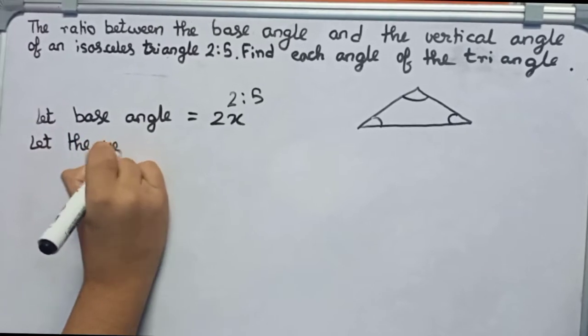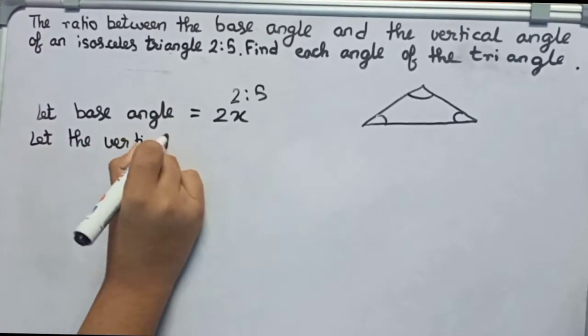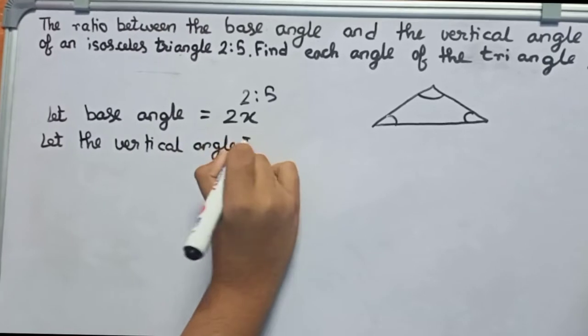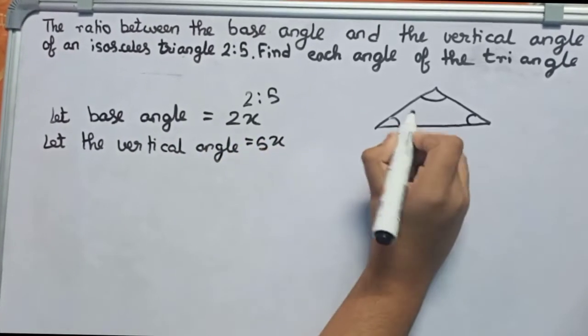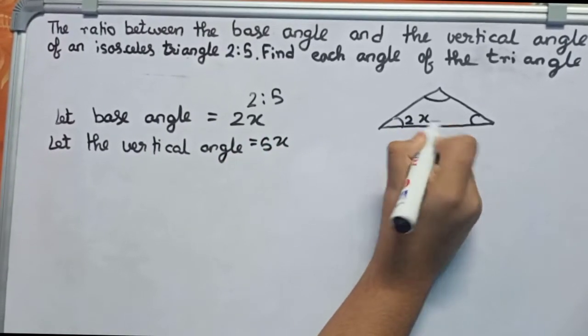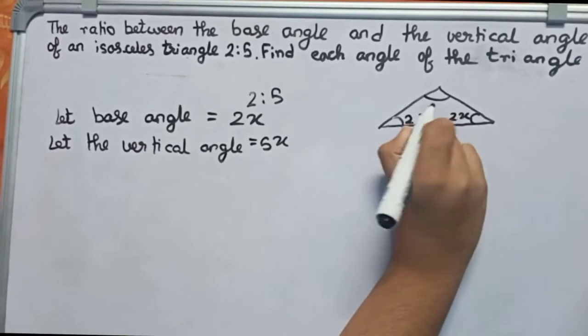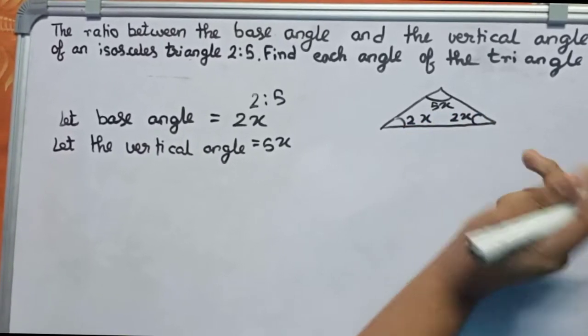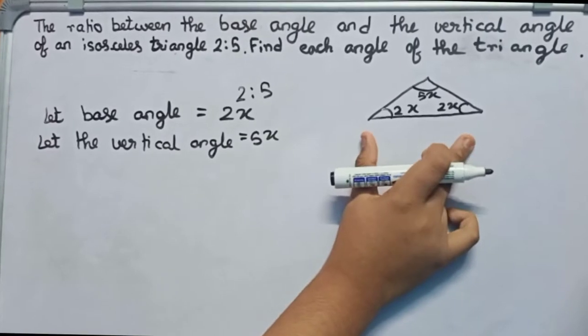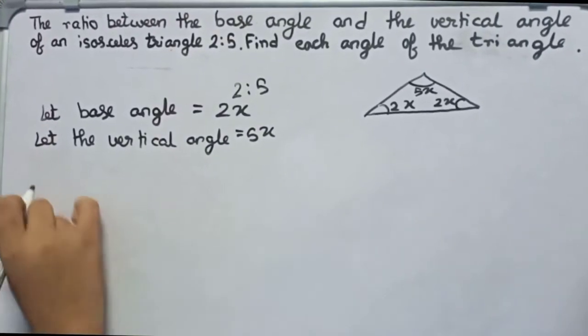So therefore you can write that this side is 2x, this side is also 2x, and the upper side is 5x. So this is the full format of the triangle. Now we know that the sum of three sides of a triangle is 180 degrees.